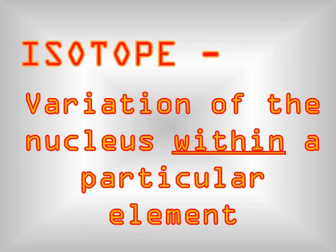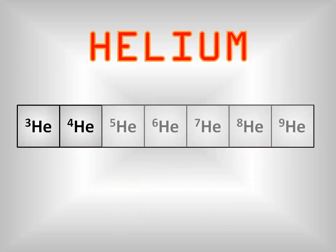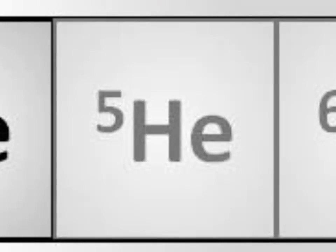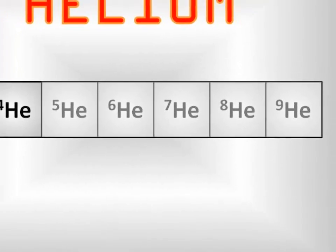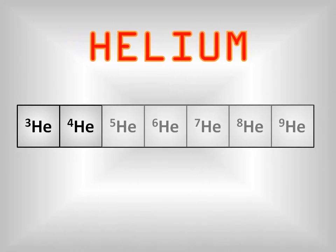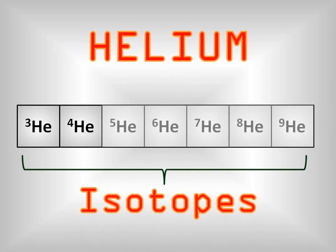Isotopes are defined as variations within a particular element. Any nucleus with the same number of protons but a different number of neutrons is an isotope of that element. Other isotopes of helium are helium-5, helium-6, and so on. The isotopes of helium that are not stable have been shaded out. It is important to remember that each of these isotopes will still have a helium nucleus and therefore contain two protons.